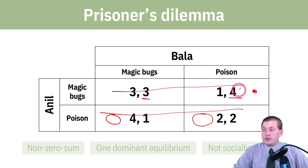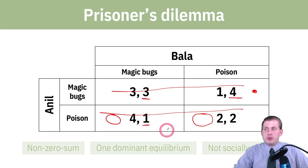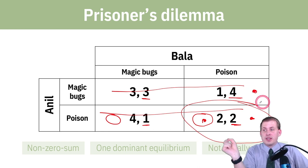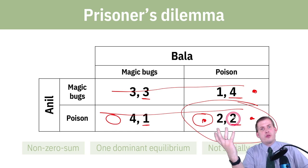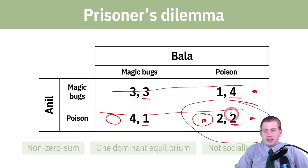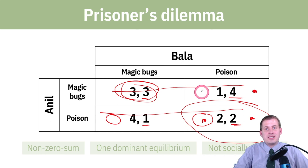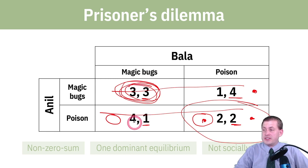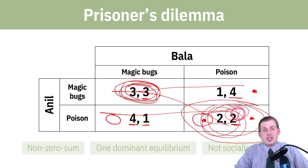Here's our Nash equilibrium. Regardless of what the other person chooses, you end up with a worse social situation. They each get two points, so there are four total units of benefit to society. If they could land on the magic bugs square, that's six units of benefit to society — the world is better off if they both use magic bugs, there would be fewer pesticides, and everybody would grow more. But because of the structure of the incentives, they're always going to end up in the poison-poison quadrant, regardless of what the other person chooses — which is suboptimal.